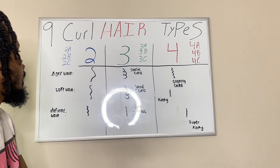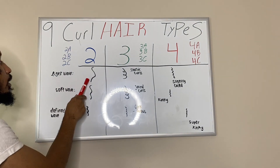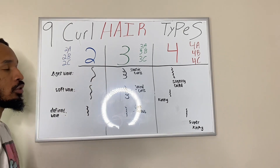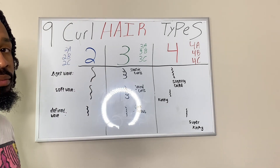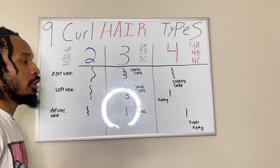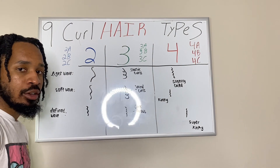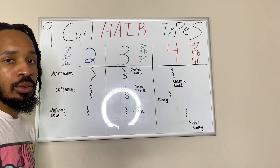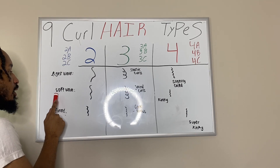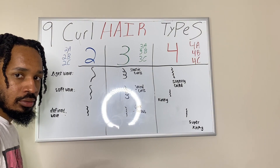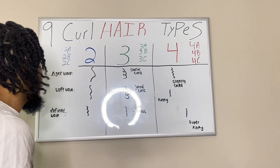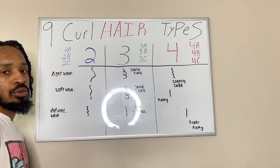Type 2 hair is normally the light wave. 2A — that's what we call the looser S curl pattern. Everything else from 2B and 2C, those are a more real S shape going down. It's not as loose as 2A, that's why we call it the light wave. But with the soft wave, you can see the S curl — the S shape, the definition in the curl — and after that it's more defined in type 2 hair.